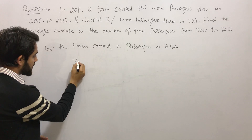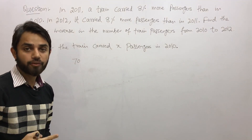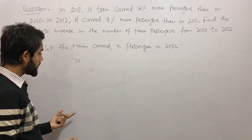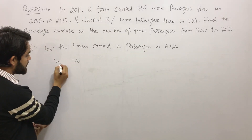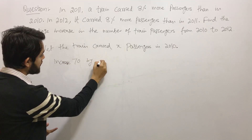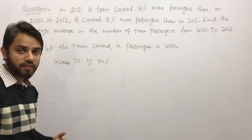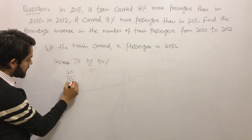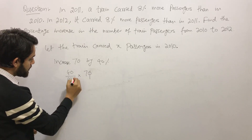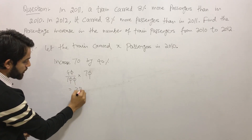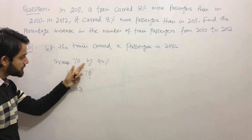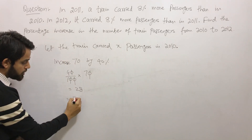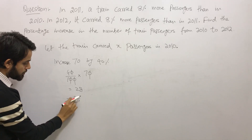Suppose we have the number 70 and we want to increase it by 40%. There are two ways to do that. Method 1: find how much 40% of 70 is. 40% of 70 means 40/100 multiplied by 70, which gives you 28. So 40% of 70 is 28. Since the question is about increase, 70 plus 28 gives you 98.